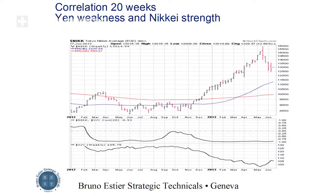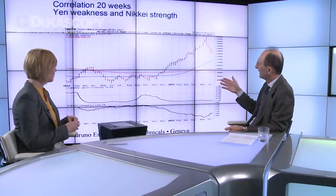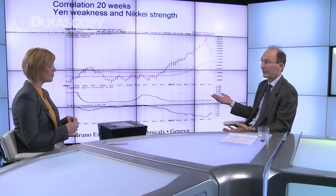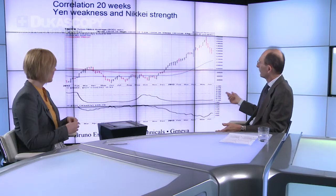To start with, we would like to see the correlation between the yen weakness and the strength of the Nikkei. As we all know, the devaluation of the yen allows exporters in Japan to have a better outlook and therefore the Nikkei was going up. Here you have a correlation computed on 20 weeks. You have three graphs: on the top the Nikkei moving from 8,000 to 16,000; in the middle a correlation measure between plus one and minus one; and at the bottom the evolution of the yen weakness, which is the inverse of the dollar-yen. As we see, the correlation between the Nikkei and the yen weakness is negative — when the yen is weak, the negative correlation implies that the Nikkei is going to be positive.